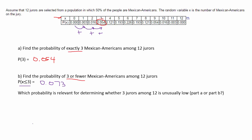The last part says: which probability is relevant for determining whether 3 jurors among 12 is unusually low? Well, this one — 3 or fewer — makes more sense because it gives us more information.